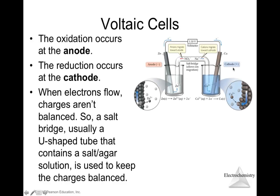Here we have a voltaic cell with a salt bridge to keep the charge balanced between both solutions. We need to maintain this charge balance because at the anode, zinc undergoes oxidation — it releases an electron and produces zinc²⁺, which increases the positive charge in that solution. A counter ion with a negative charge is needed to neutralize that positive charge. The salt bridge allows ions to migrate from one solution to the other to create that charge balance. Electrons come from the anode through the voltmeter, where you can read the potential of the cell.